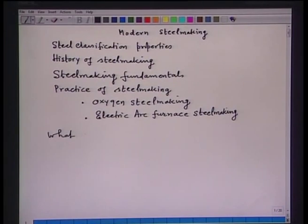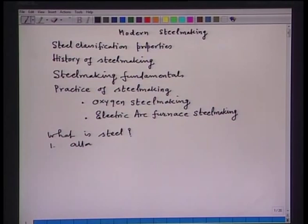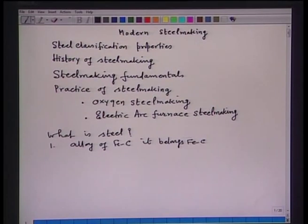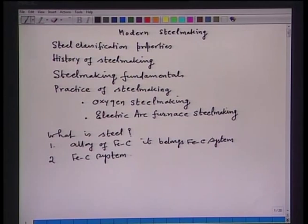I will start by telling you what is steel, so that you can appreciate its importance in the modern economy. Steel is an alloy of iron and carbon, and belongs to the iron-carbon system. This iron-carbon system has a unique property of alloying with several elements of the periodic table.